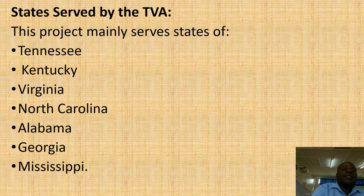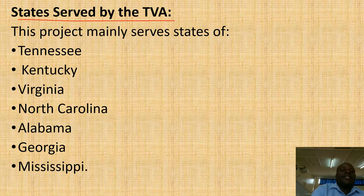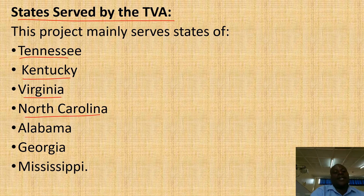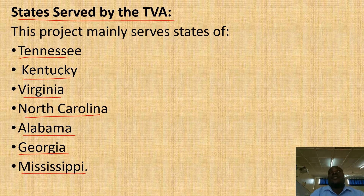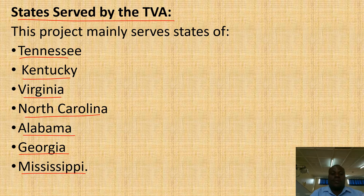What are the states served by the TVA? We have Tennessee, Kentucky, Virginia, North Carolina, Alabama, Georgia, and Mississippi. These are the states that by then had suffered severe problems like soil erosion, floods, poverty, unemployment, and shortage of power, and therefore the project came as a savior of these states.